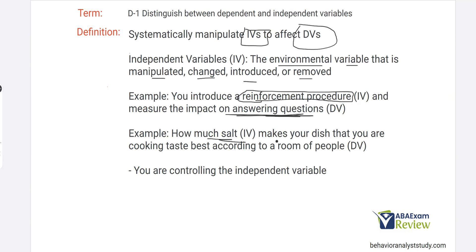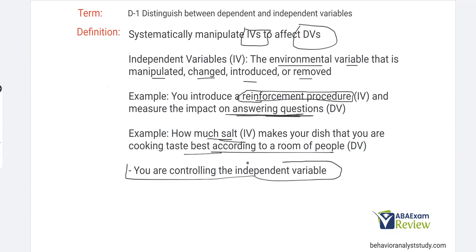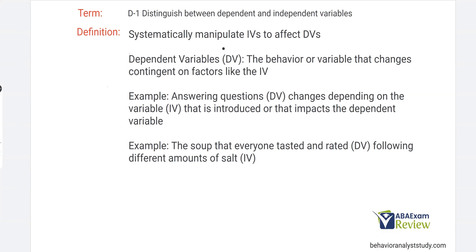Or consider how much salt makes your dish taste best according to a room of people. Those people's opinions — how it tastes, how they think it tastes — is affected by how much salt you add or take away from your dish. Bottom line: you are controlling that independent variable, and the DV is being affected by what you're controlling.